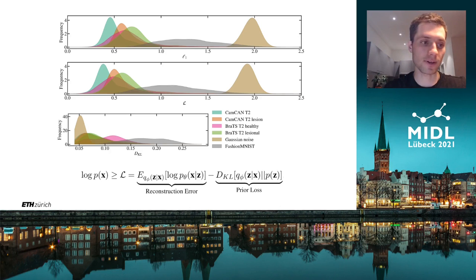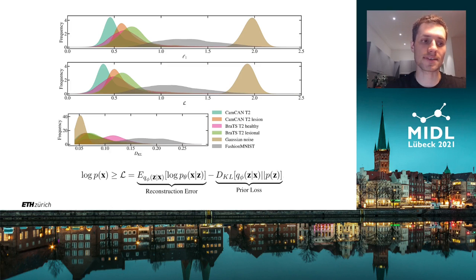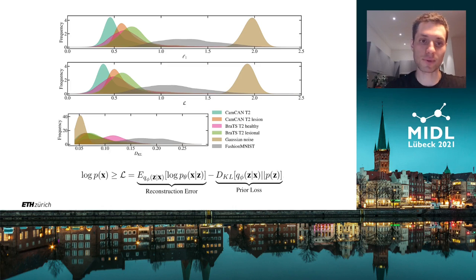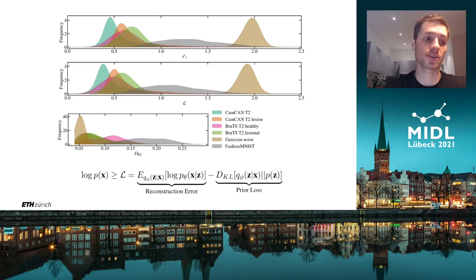Furthermore, from the bottom-most graph we can see that it might be potentially dangerous to rely solely on the KL divergence as an anomaly measure, since samples which are very OOD could be mapped in a way that results in a small KL divergence.